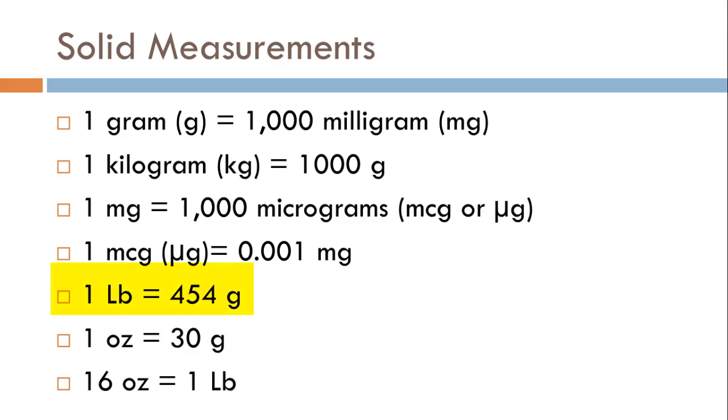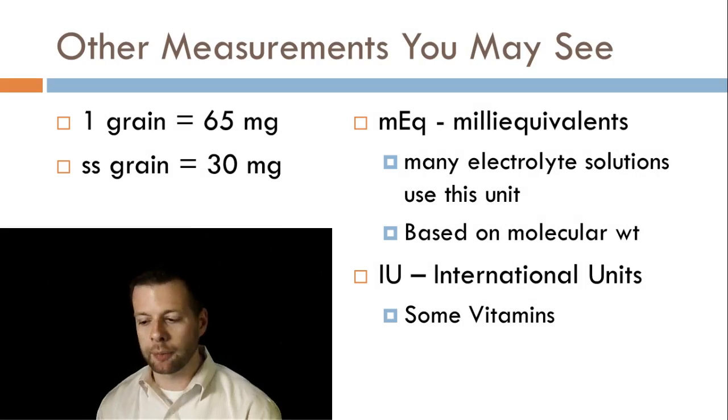Next, let's talk about one pound is 454 grams. Real good flash card to make there. Just know it. One pound, 454 grams. And then one ounce, just like one fluid ounce was 30 mils, one solid ounce is 30 grams. And then 16 ounces make a pound. Good one to know right there.